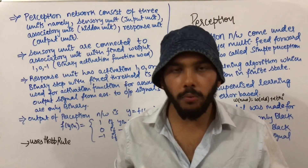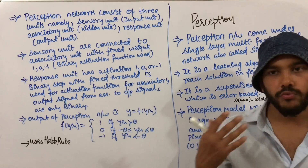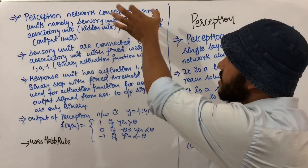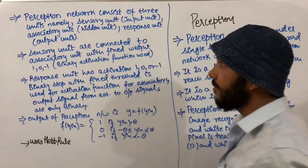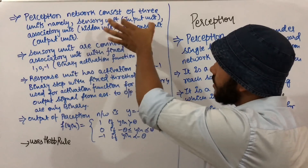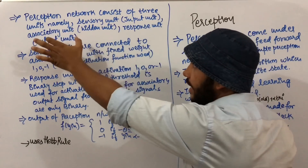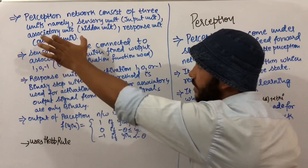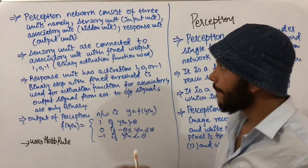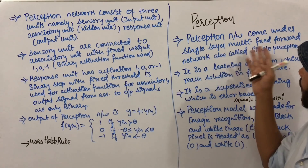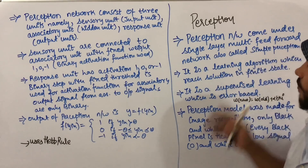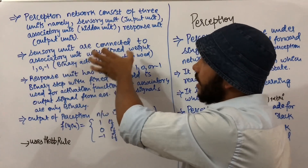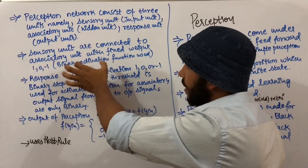The perceptron network consists of three units: the sensory unit (input unit), the associatory unit (hidden unit), and the response unit (output unit). Since it is a multi feed-forward network, it has three layers.